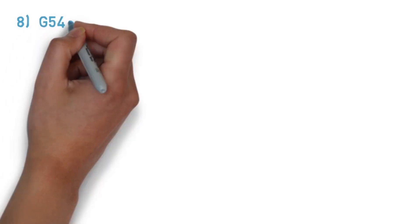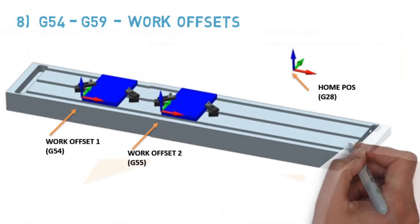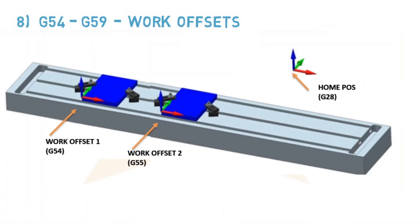Number eight, G54 to G59 - Work Offsets. These are the position points X0, Y0, Z0 we can set for our workpiece or fixture. For a single workpiece, we use G54. When we have multiple workpieces or fixtures, then additional work offsets are used.